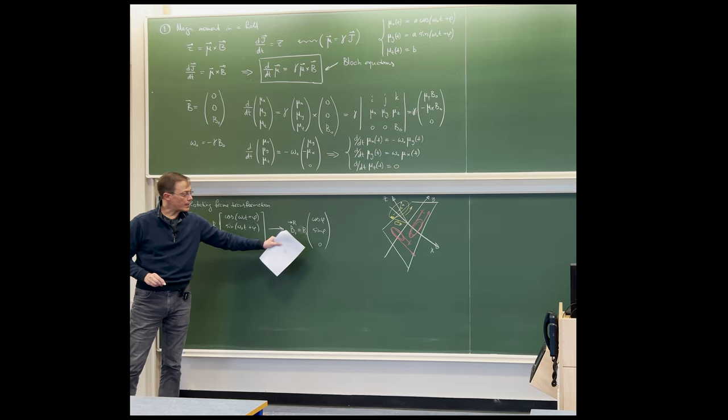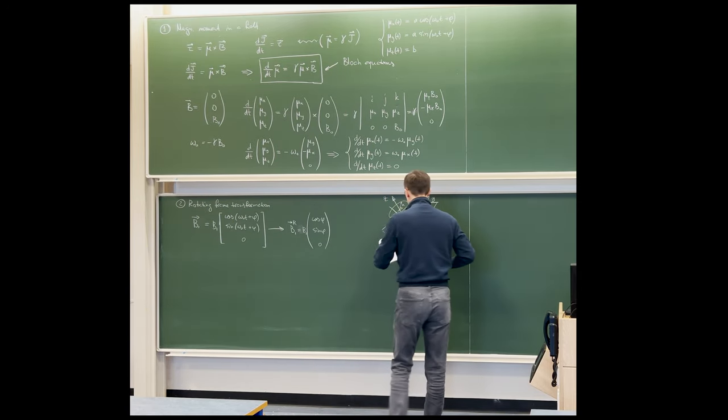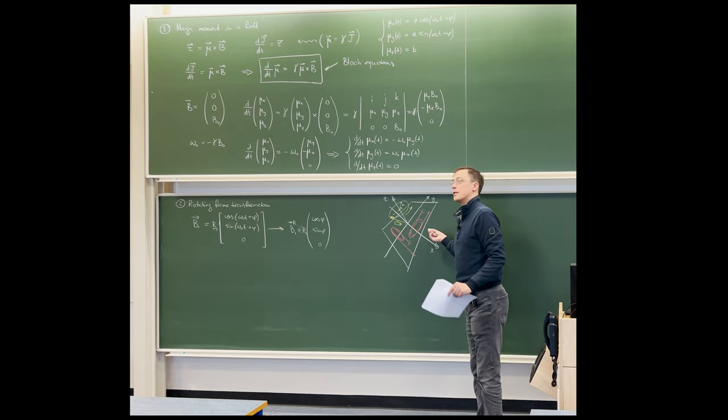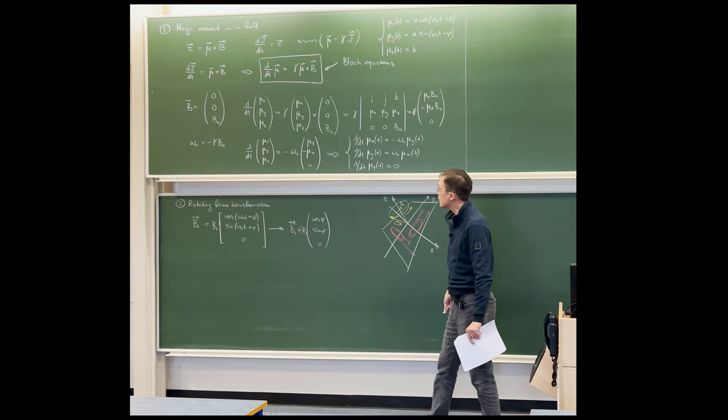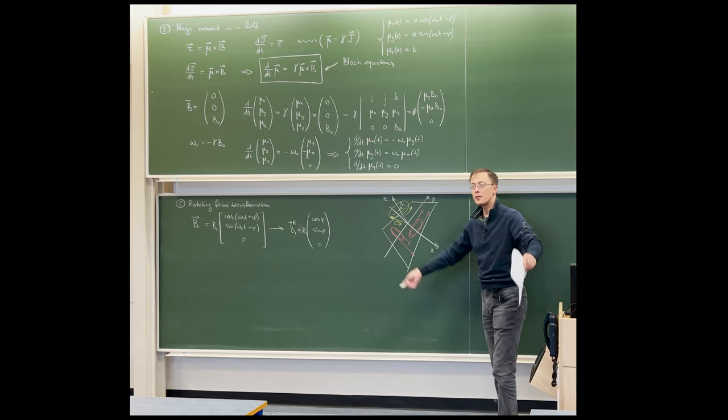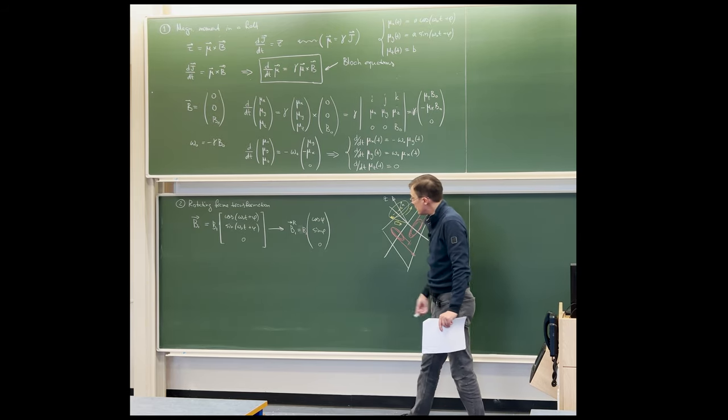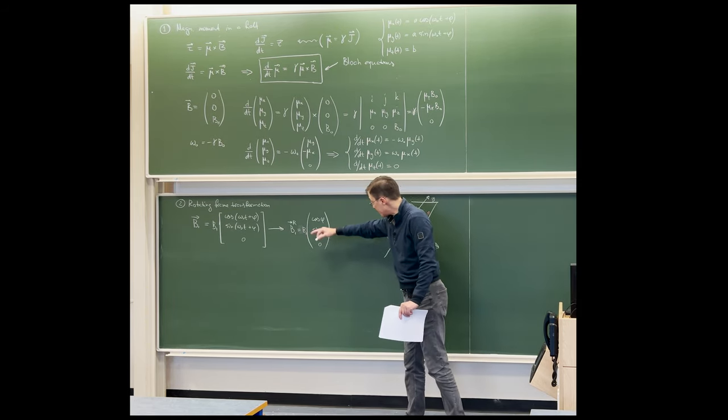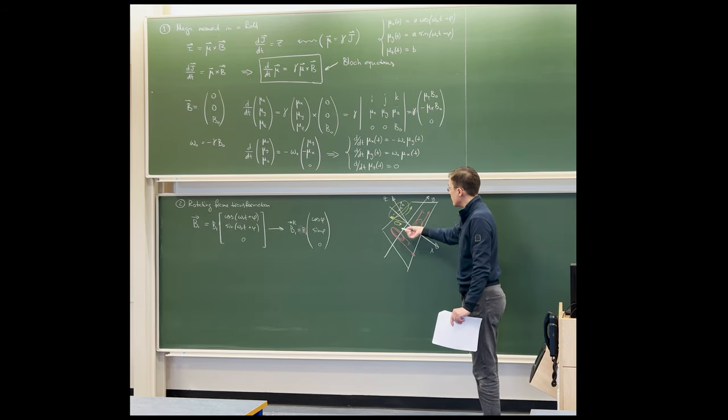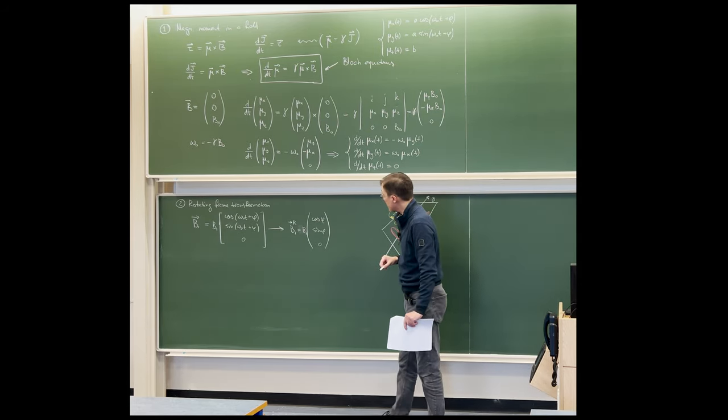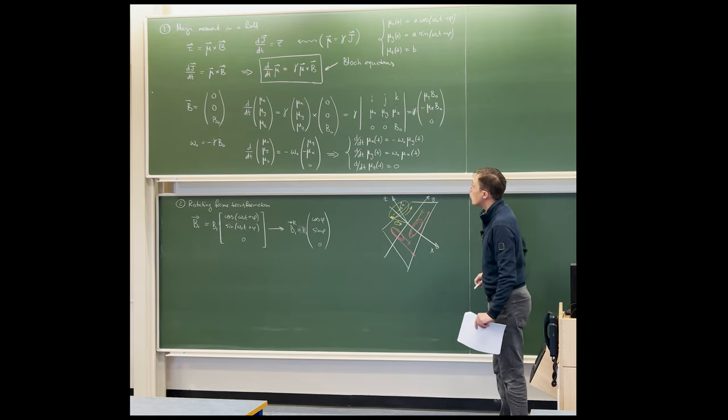If we now do the rotating frame transformation on this, the omega_0 t will disappear because we're looking through a camera already rotating with that frequency. So in the rotating frame, B1r will simply have the cos phi and sin phi components and the amplitude term. Depending on the initial phase, what B1r looks like in the rotating frame is as if it were a static field, which is a considerable simplification.